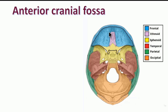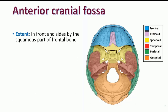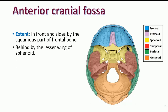Mainly this part — the frontal bone. The orbital part of the frontal bone forms the roof of the orbit, and in front and on the sides it is actually bounded by the frontal bone itself — the squamous part of the frontal bone. This is the orbital plate of the frontal bone which forms the roof of the orbit. Posteriorly, it is limited by the yellow-colored structure you can see — the lesser wing of the sphenoid.